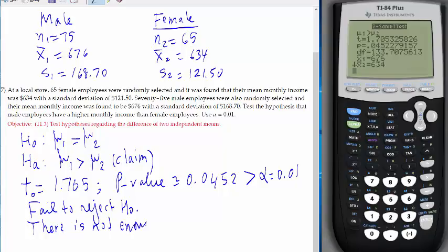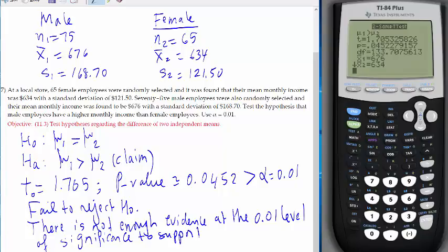Conclusion: there is not enough evidence at the 0.01 level of significance to support the claim that the male employees have a higher monthly income than female employees. Make sure to write this down.